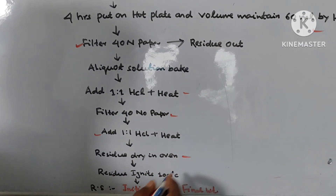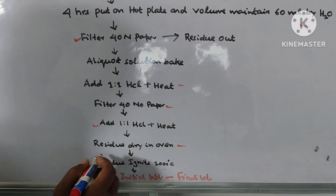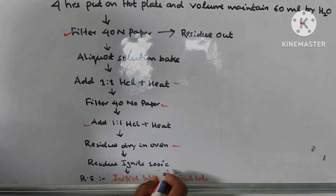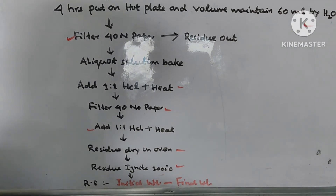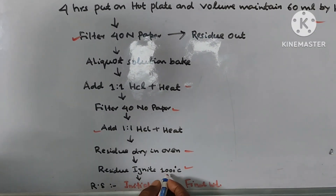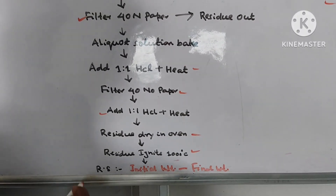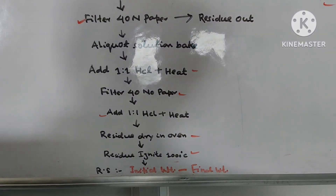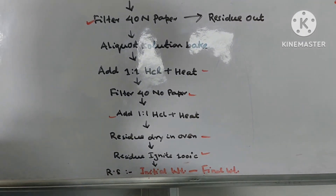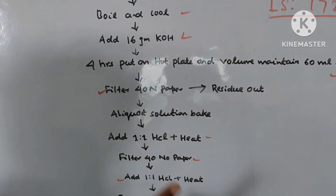Then add 1 to 1 HCl with small heat also. Then the residue — dry in the oven. Residue part obtained — dry in the oven. Next step: ignite the residue at 1000 degrees centigrade. At that time, loss on ignition is recorded, maintaining 1000°C temperature. Finally, reactive silica present in fly ash is determined as: initial weight minus final weight equals the reactive silica of fly ash.